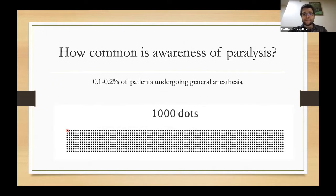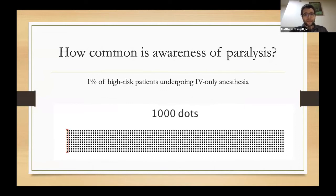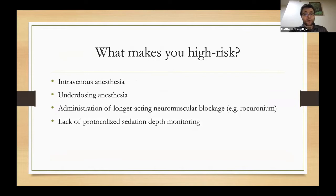How common is this? It's been well studied in the OR setting: 0.1% to 0.2% of patients undergoing general anesthesia who are paralyzed can have awareness. On this slide, I've got a thousand dots and one circle to visually represent what 0.1% looks like. For a higher-risk cohort receiving only IV anesthesia, that rises to 1%. Risk factors include IV anesthesia, underdosing, longer-acting neuromuscular blockade like rocuronium, and lack of protocolized sedation depth monitoring — all of which apply in the emergency department.